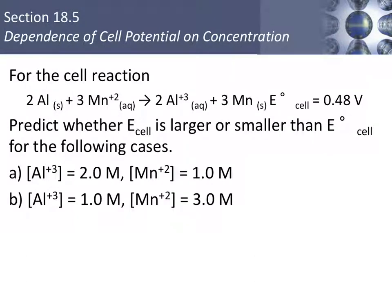So for the following reaction, we are going to predict whether the new cell potential would be larger or smaller than the standard cell potential. Again, the standard cell potential is at 1 molar concentration. So in letter A, we have an aluminum ion concentration of 2 molar. Aluminum ion is a product, and now we have less reactant than product. So the cell potential decreases.